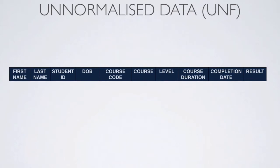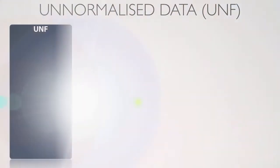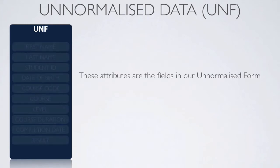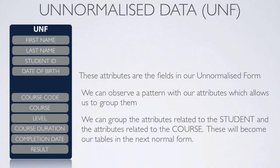Let's focus on the columns or fields in our database rather than the actual records or rows. We can straightaway see a pattern and group these mentally — we don't have to do it physically. We can see that first name, last name, student ID, and date of birth are all linked to a student's personal details. Then the course code, course level, course duration, completion date, and results are all related to the course.